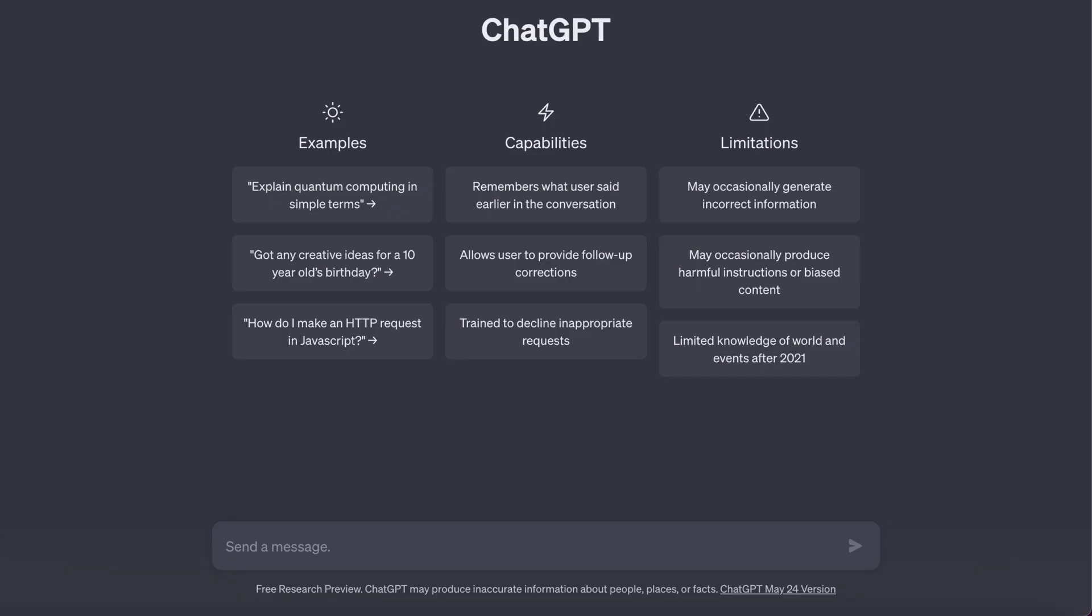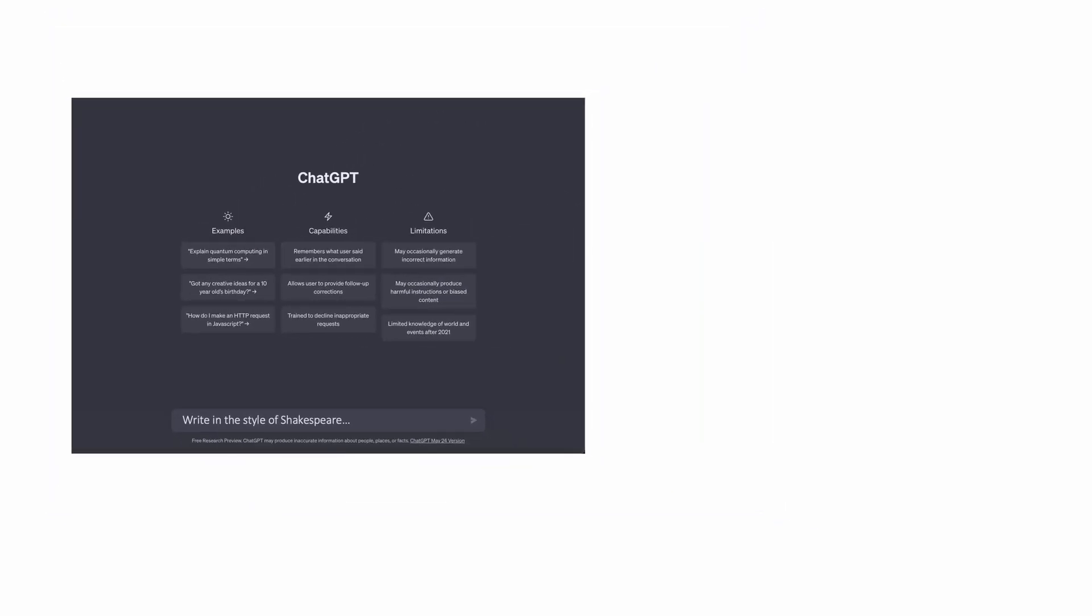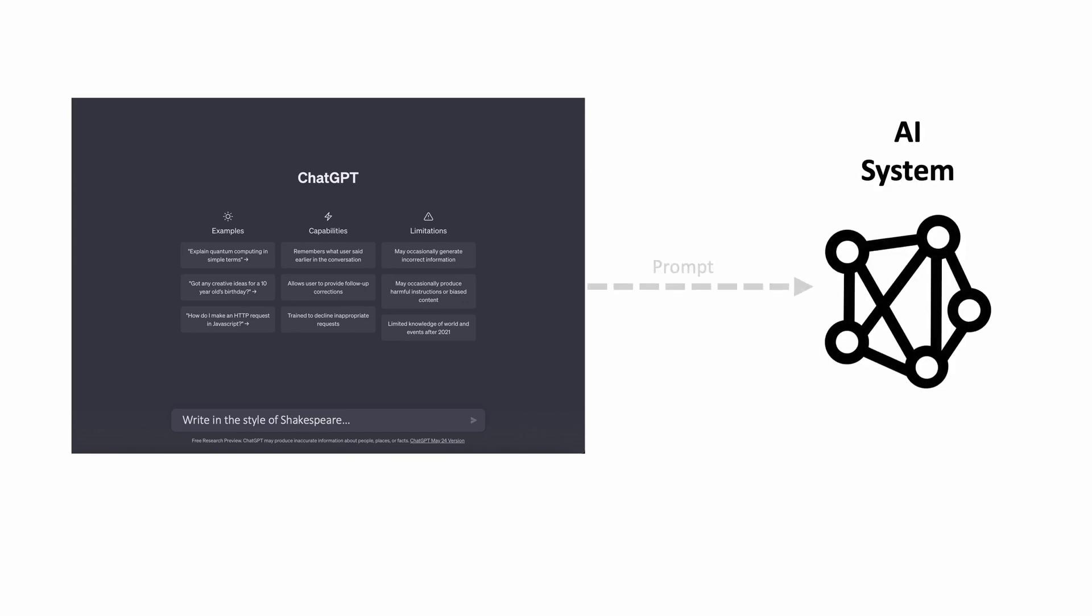Most of us have used ChatGPT and are quite fascinated by its capabilities. So you can ask something like write in the style of Shakespeare, how to cook pasta. What happens behind the scenes is that it takes your input and sends it to an AI system as a prompt and that generates a response which is provided back to you. And often these systems are called large language models which are trained on a huge amount of text data from the internet.